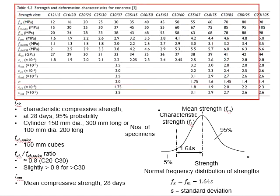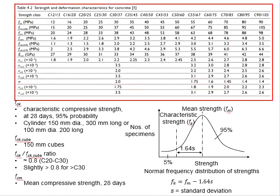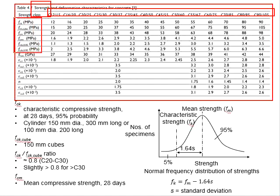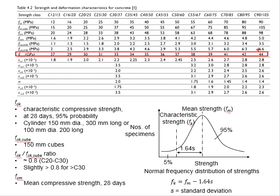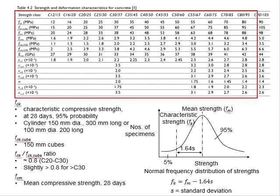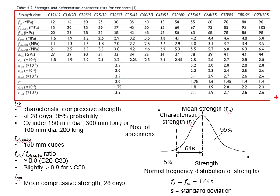This table shows the characteristics of concrete of different grades, specifically in terms of strength and deformations. The modulus of elasticity is also given here. This table can be obtained from Eurocode 2, Part 1, Table 3.1.